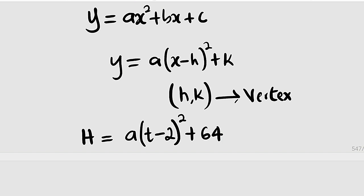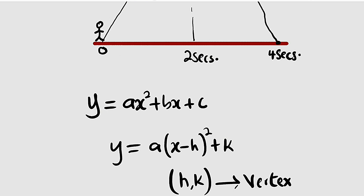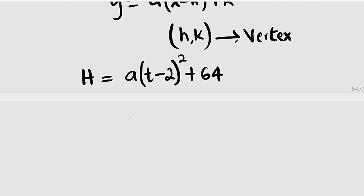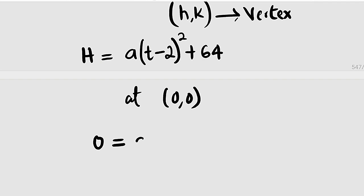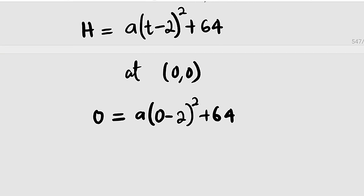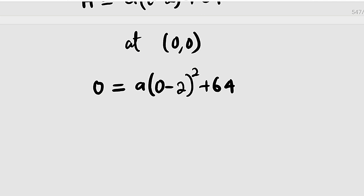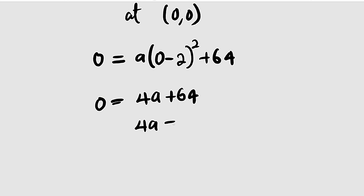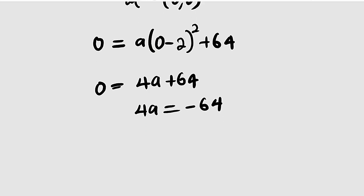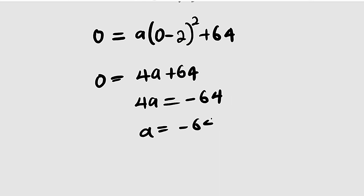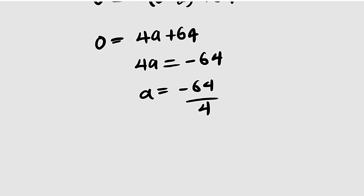So all we need to find is the value of a, and we can pick any point. Let us pick the origin where both time and the height are equal to 0. So at (0,0), we have h to be 0 equal to a times 0 minus 2 all squared then plus 64. We have 0 minus 2, which is negative 2. If you square that, you get 4. So this is 0 equal to 4a plus 64. Take 64 to the other side, it becomes negative. We have 4a equal to negative 64. You divide both sides by 4. A will now be equal to negative 64 divided by 4, and negative 64 divided by 4 is negative 16. Therefore, a is equal to negative 16.